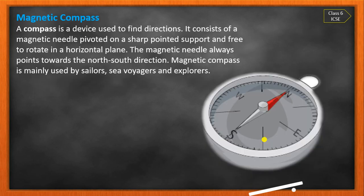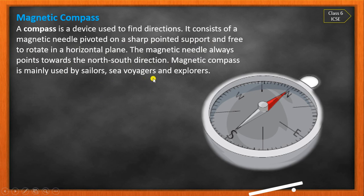A magnetic compass is a device used to find direction. It consists of a magnetic needle on a sharp pointed support, free to rotate in a horizontal plane. The magnetic needle always points in the North-South direction. The magnetic compass is mainly used by sailors, sea voyagers, and explorers.